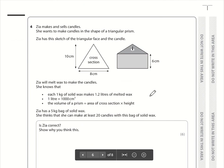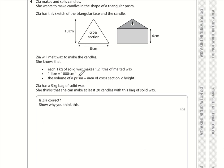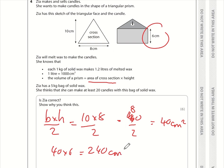Question 4: this shape looks like a house — a rectangle with a triangle on top — but we need to imagine it as the top of a candle, a three-dimensional drawing. We first work out the area of the cross section, which is a triangle. Area of a triangle is base times height divided by 2: 10 times 8 divided by 2 is 80 divided by 2, which is 40 square centimetres. The volume of a prism is the area of the cross section times the height: 40 times 6 is 240 cubic centimetres.